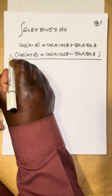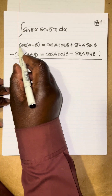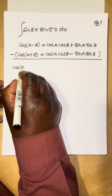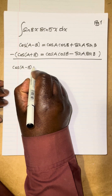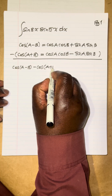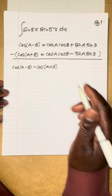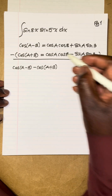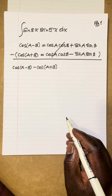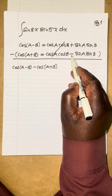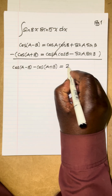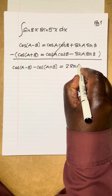Taking the first minus the second, on the left hand side we get cosine of a minus b minus cosine of a plus b. On the right hand side, the cosine cosine terms cancel because they are the same, and that minus sign changes to plus, so the two sine terms add — giving us 2 sine a sine b.